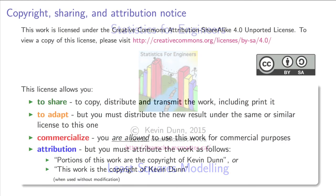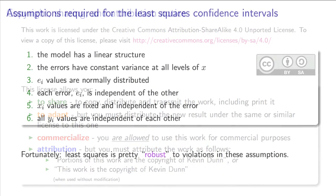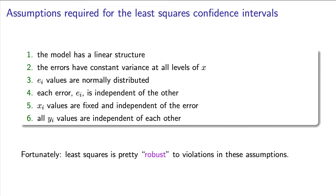In the prior video, we showed six assumptions we are going to need if we want to derive confidence intervals for beta 0 and beta 1.